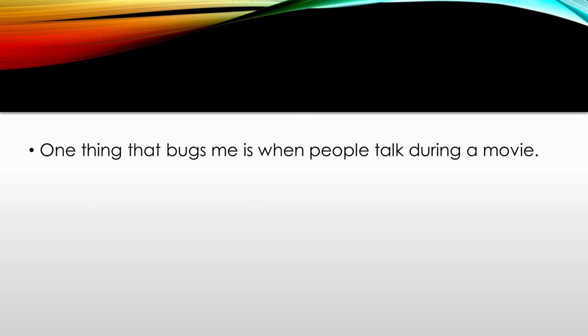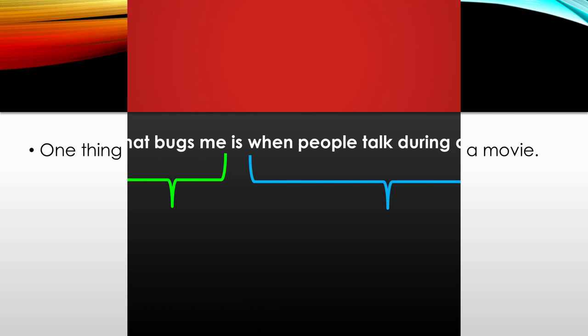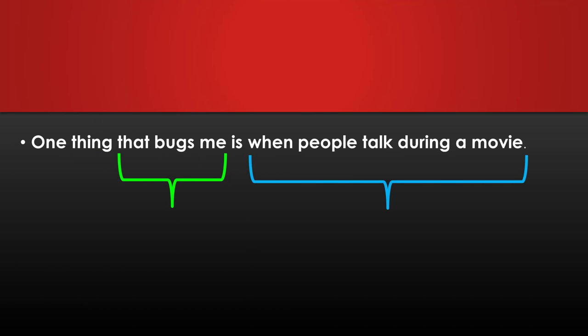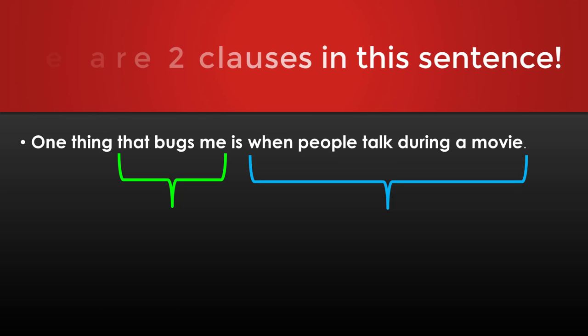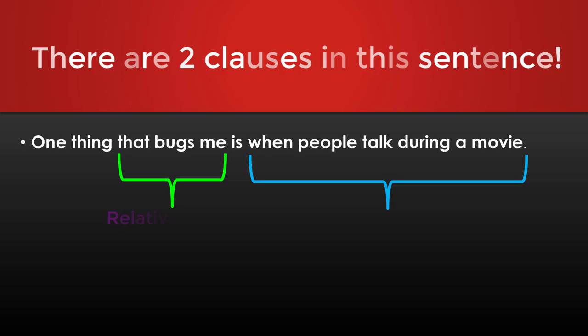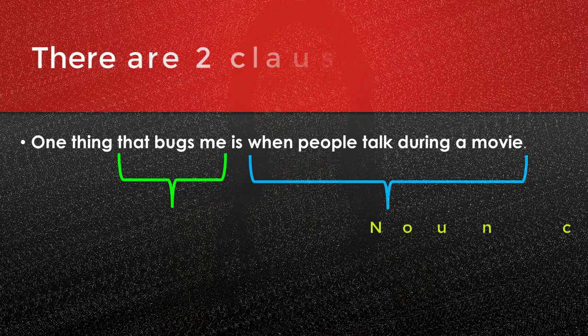Read this sentence with me: 'One thing that bugs me is when people talk during a movie.' There are two clauses in this sentence. 'That bugs me' is a relative clause, and 'when people talk during a movie' is a noun clause. Now type examples using relative clauses in the subject and in the object of a sentence.